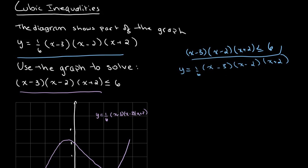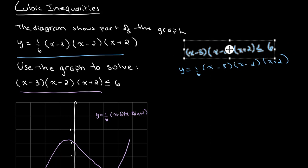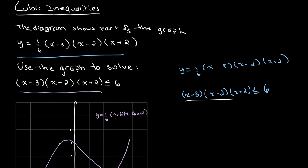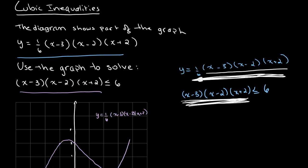What we want to do is get our inequality to match our graph. If you look at both of these expressions, they're practically identical — (x − 3)(x − 2)(x + 2) appears in both. The only real difference is the 1/6 factor, so we need to get our inequality to match the full equation in the graph.